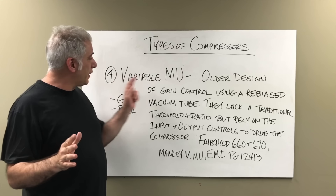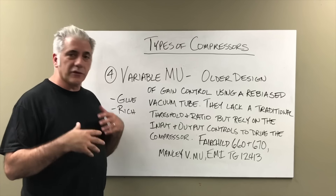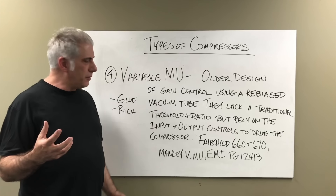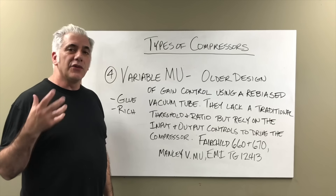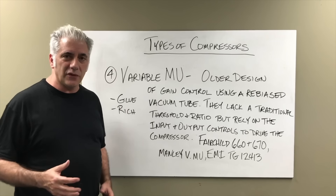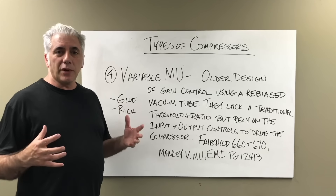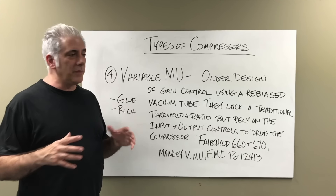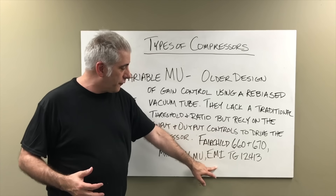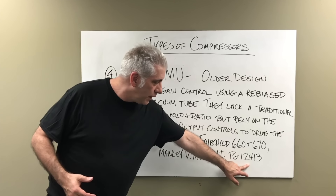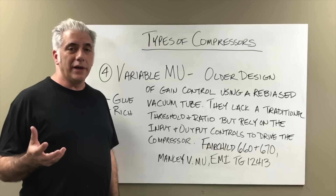The fourth compressor design is the Variable Mu. It's an older design of gain control that uses a re-biased vacuum tube for gain reduction. These lack a traditional threshold and ratio, relying instead on input and output controls to drive the compressor. The most common examples are the Fairchild 660 and 670 — the 660 is a mono unit, the 670 is stereo. Think of the Beatles, think of Pink Floyd. These are incredibly rich-sounding compressors and very expensive. EMI made their own hardware compressor to emulate the Fairchild, called the EMI TG-12413 — the Abbey Road compressor — and those are incredibly good sounding.